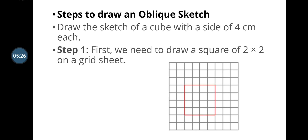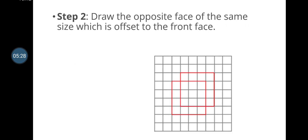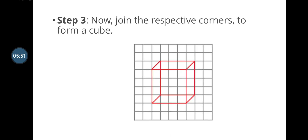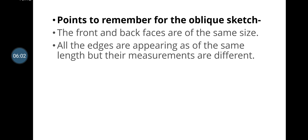Next, draw the opposite face of the same size, offset from the front face. The first face is in front and the second square is drawn behind the first one, leaving one grid space. Then join the respective corners to form a cube so that it looks like a 3D figure.